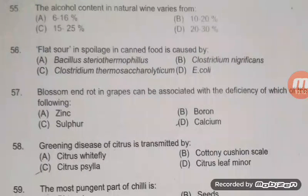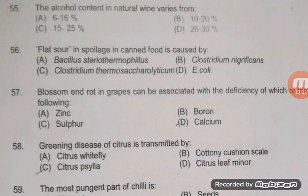The alcohol content in natural wine varies from generally 7 to 20%, but according to the option, tick on B — 10 to 20%.